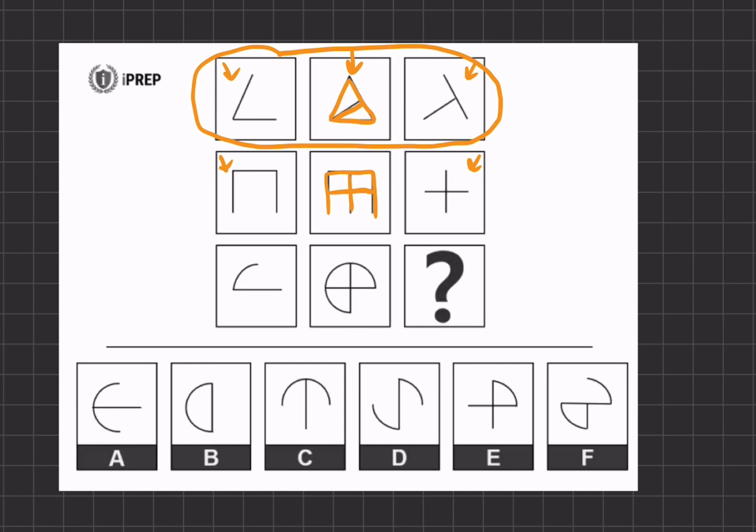All right, so now let's look at our third row and see what our missing figure should be. If we take our first figure on the left and we draw it out over here, the missing part of our final figure should be this figure in green.